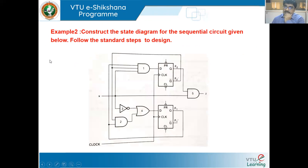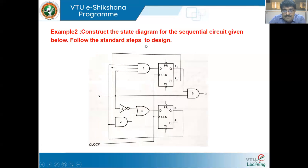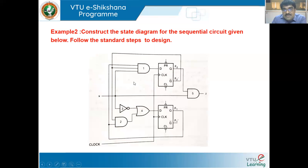The second example is: construct the state diagram for the sequential circuit given — follow the standards. This is a reverse engineering problem. For a given problem, we normally go from state table to expression to circuit. But here, they have given the circuit itself and we have to obtain the state diagram from it.